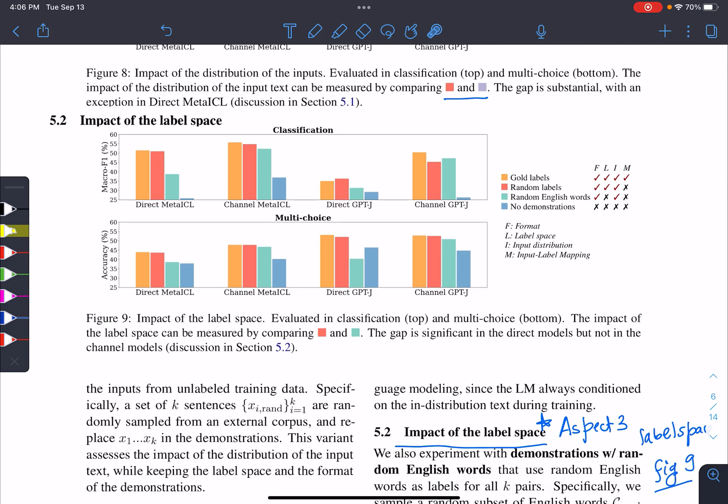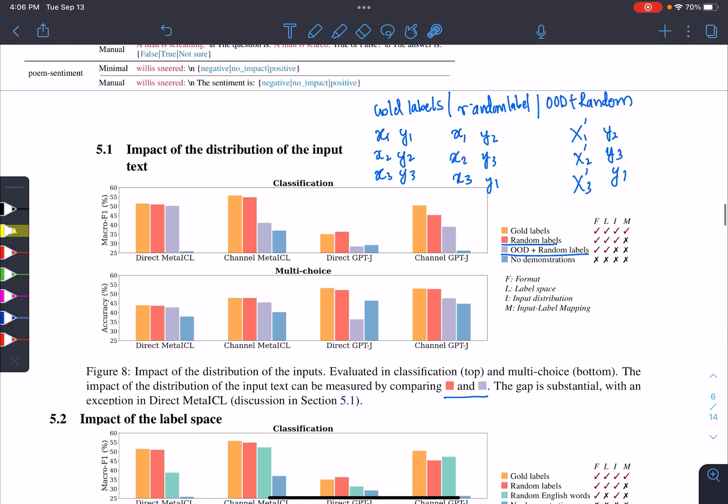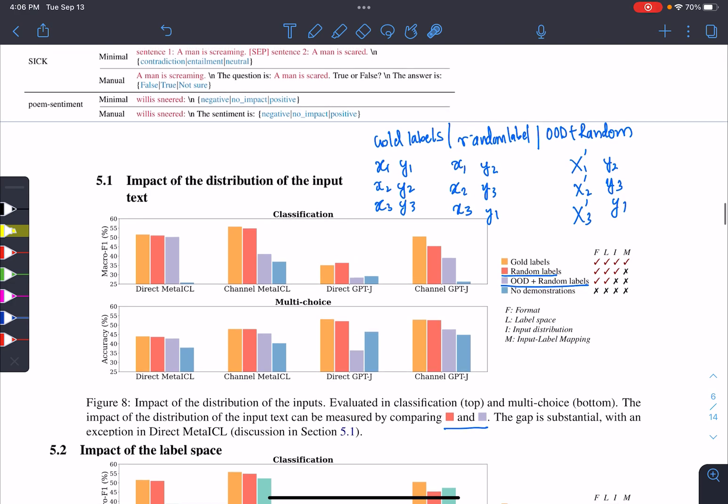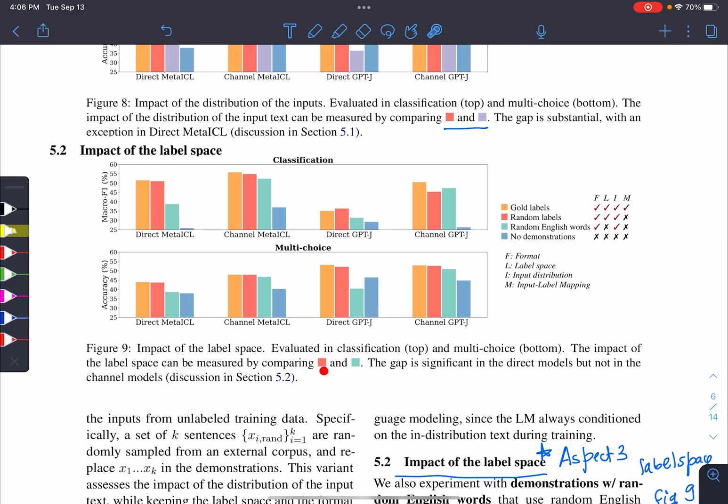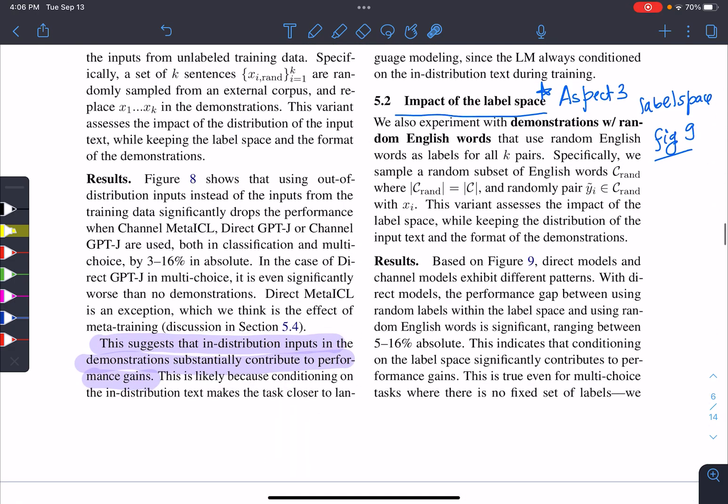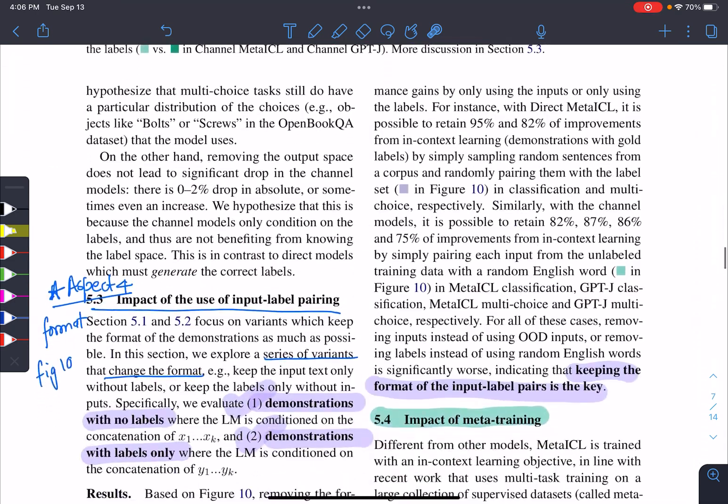There's the label space. Label space is, if you replace, I mean, you keep this thing as it is, but if you replace this one with some random English words, in that case, you have to compare orange with the green. And you always see this, except few, there's decreasing performance. So it is also one of the factors. Label space is done.